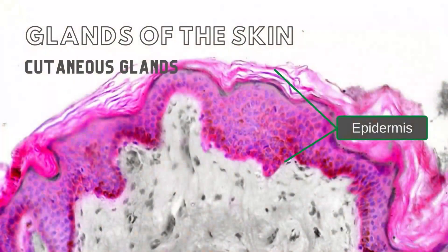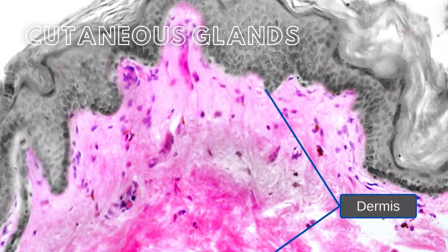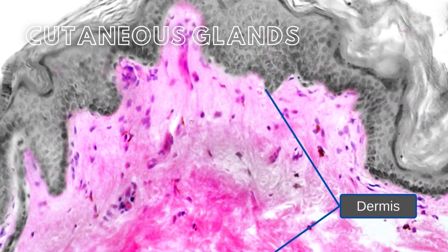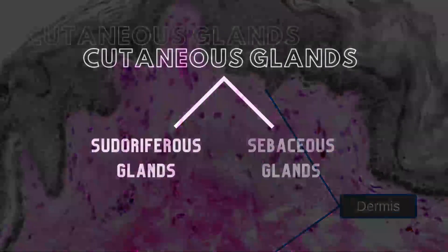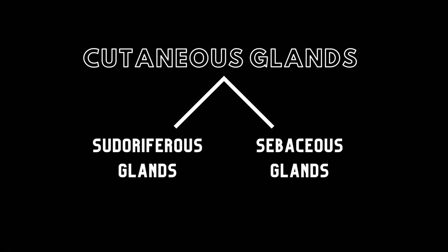Glands of the skin, also termed cutaneous glands, develop as outgrowths of the epithelium of the skin's epidermis. As cutaneous glands develop, they often extend deep into the dermis of the skin. Cutaneous glands fall into two different categories: sudoriferous and sebaceous glands.